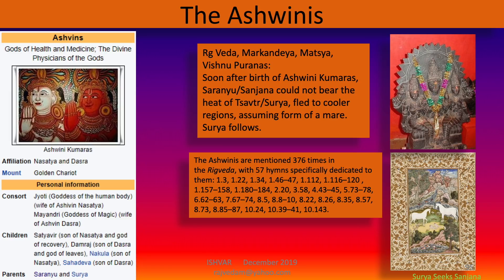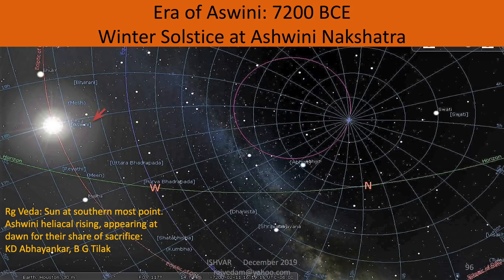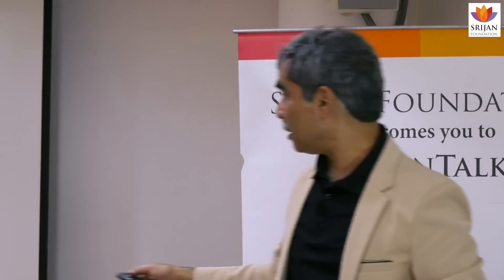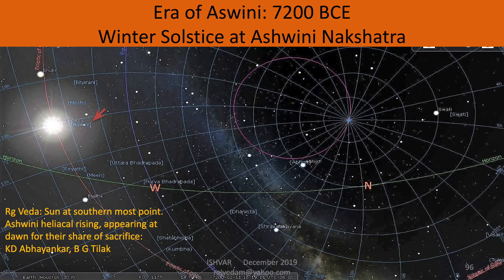The Ashwinis are mentioned 376 times in the Rig Veda, with references also in Markandeya and other Puranas. From the Puranic story, after Sanjana — the wife of Surya — gave birth to the Ashwinis, she couldn't take the heat of Surya. So she left her shadow Chaya in her place and went off to southern regions where it was coolest. When the sun is in the northern hemisphere, she is in the southern hemisphere, as far away as she can get from him. This means that when the winter solstice happened at Ashwini Nakshatra, the Ashwinis appear at dawn for their share of sacrifice — a statement in Rig Veda. Balakangadhar Tilak and Abhyankar decoded this as referring to an era at 7200 BCE.